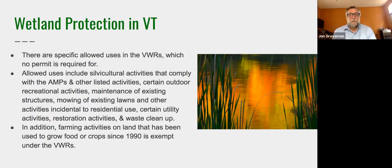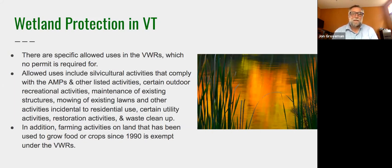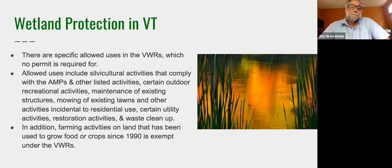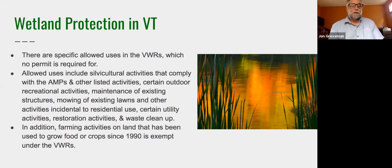Allowed uses include things like mowing lawns where the lawn already exists or activities incidental to an existing residential property, and certain utility activities. There is also an exemption for farming activities on land that has been used to grow food or crops since 1990 — the year the wetland rules went into effect. This provision has been controversial in the last couple of years.